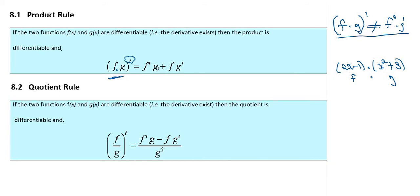The product rule says: find the derivative of the first function and multiply it by the second function as it is, plus the first function just as it is multiplied by the derivative of the second function.